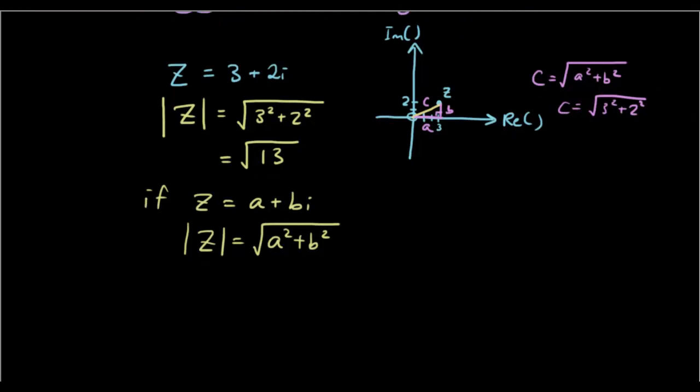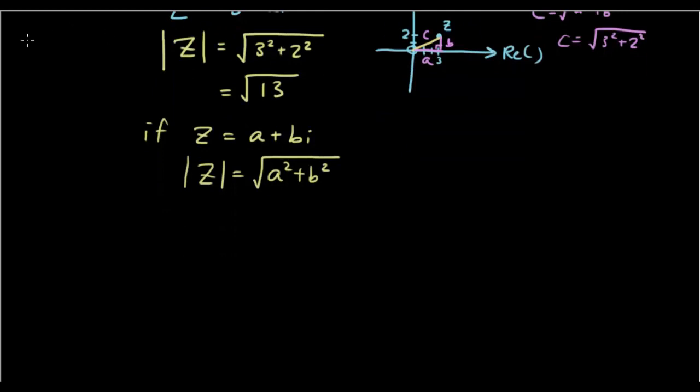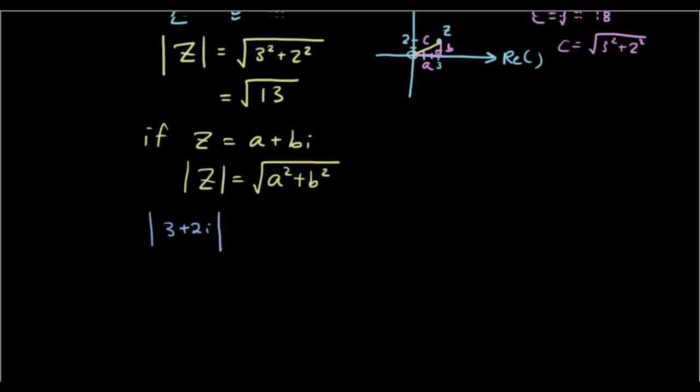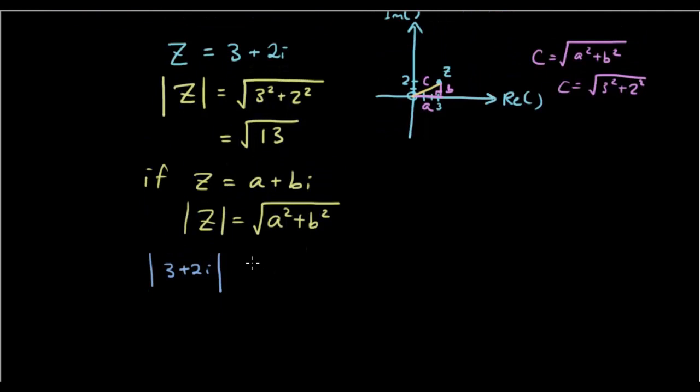So you could also use the modulus symbol and just put the complex number inside it, so instead of z, you could just put in here 3 plus 2i, and then you would basically do the same thing.